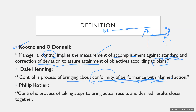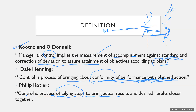Dale Henning defined: Control is the process of bringing about conformity of performance with the planned action. Philip Kotler defined: Control is the process of taking steps to bring actual results and desired results closer together — to reduce the gap between what actually happened and what was desired.